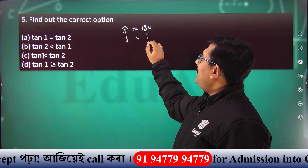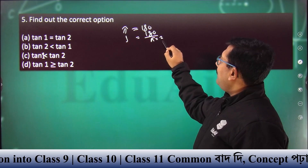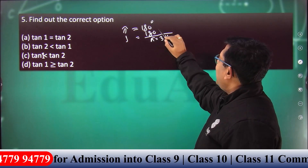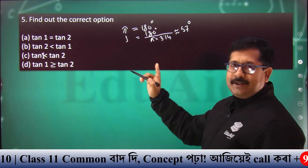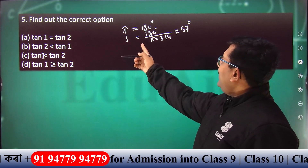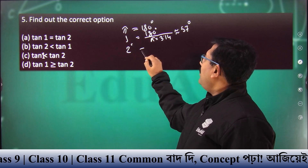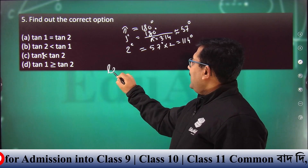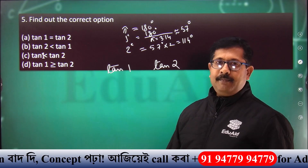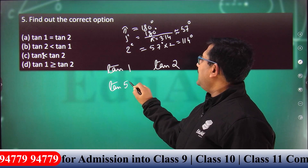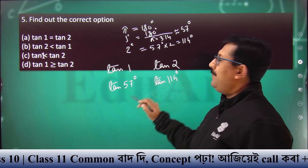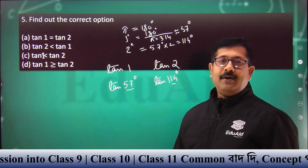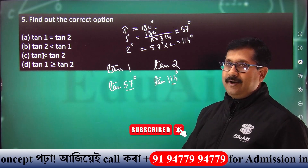1 radian equals 180 divided by pi, approximately 57 degrees. So 1 radian equals 57 degrees, 2 radian equals 57 into 2 equals 114 degrees. Comparing tan 1 radian and tan 2 radian: tan 57 degrees compared with tan 114 degrees. 57 degrees lies in the first quadrant where all trigonometric ratios are positive. 114 degrees lies in the second quadrant where tan is negative.